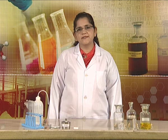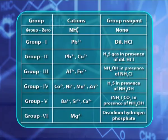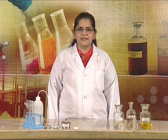Welcome to today's session on analysis of cations of group 1. Different cations have been divided into groups 1 to 6 based on the solubility products of their salts. The ammonium cation is placed in a separate group, which is group 0, because it forms soluble salts with all reagents. In the scheme of qualitative analysis of cations, the lead ion is the cation of group 1. Today, we will perform tests for identification of this cation.